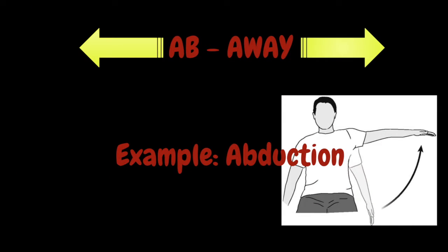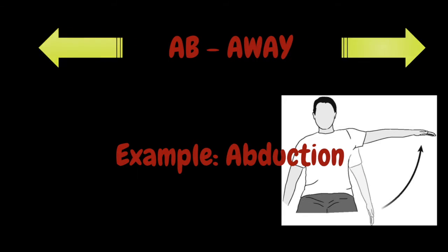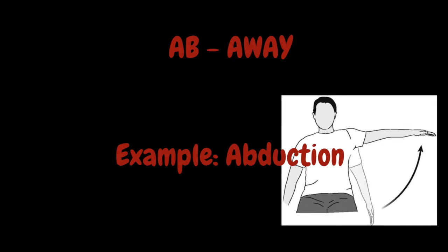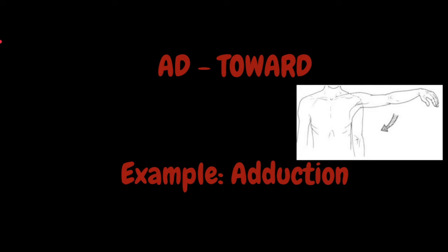Whenever you see a prefix beginning with AB, that means away. An example is going to be abduction — duction means to conduct, AB means away, so this word means to conduct away. Whenever you see a prefix beginning with AD, that means toward. An example is going to be adduction — duction means to conduct, AD means toward, so this word means to conduct toward.